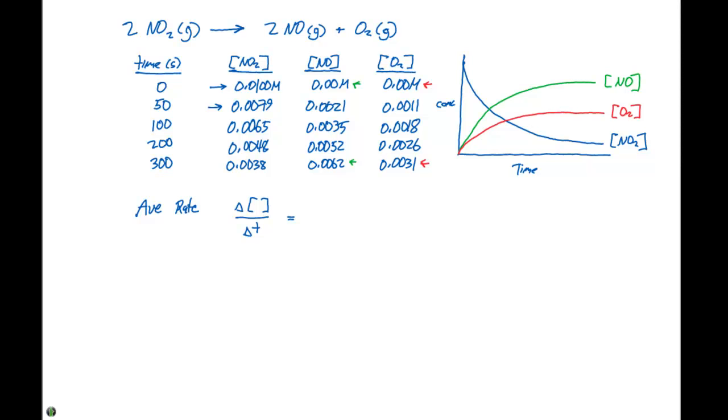So, the change, remember, is the final minus the initial. So, we're gonna do 0.0079 minus 0.0100, that's gonna be divided by the final time, which is 50 seconds, minus the initial time, which is 0 seconds. If we do the math here and come up with an expression, we're gonna get negative 4.2 times 10 to the fifth molar per second.